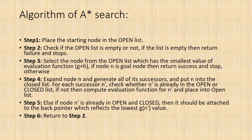Algorithm of A* search: Step 1, place the starting node in the open list. Step 2, check if the open list is empty or not. If the list is empty then return failure and stops. Step 3, select the node from the open list which has the smallest value of evaluation function g + h. If node n is goal node then return success and stop, otherwise.